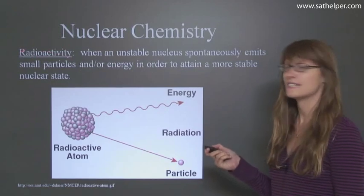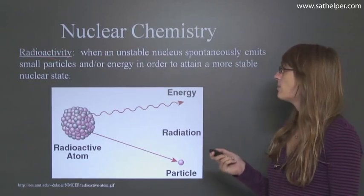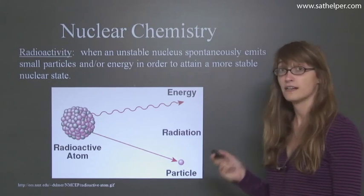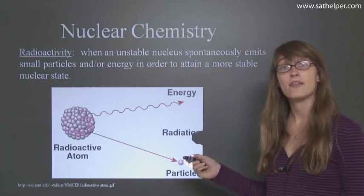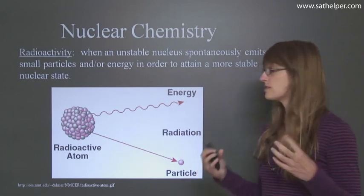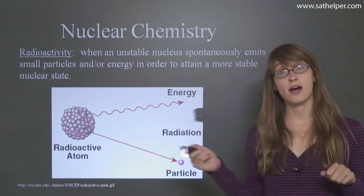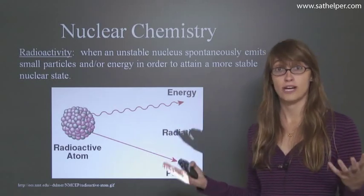First we're going to start with radioactivity. When an unstable nucleus spontaneously emits small particles or energy in order to attain a more stable nuclear state, that means it's radioactive. So you have these nuclei and they're made up of protons and neutrons, and they can spit things out. They can spit out a particle, they can spit out energy, and this act of spitting things out of the nucleus is called radioactivity.